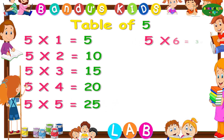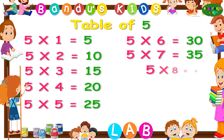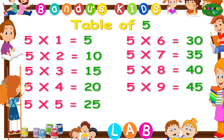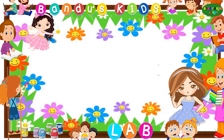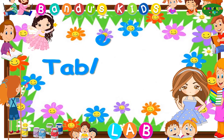Five sixes are thirty. Five sevens are thirty-five. Five eights are forty. Five nines are forty-five. Five tens are fifty. Now it's your turn to say the table of five.